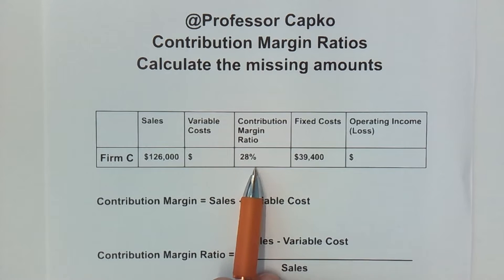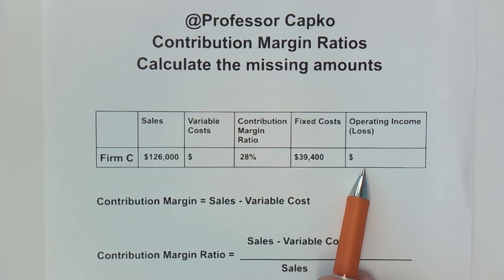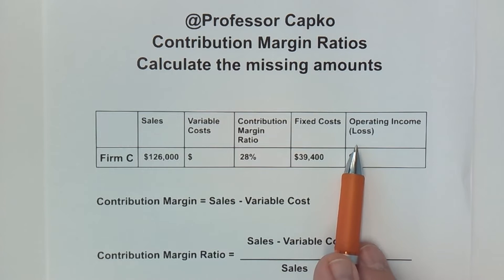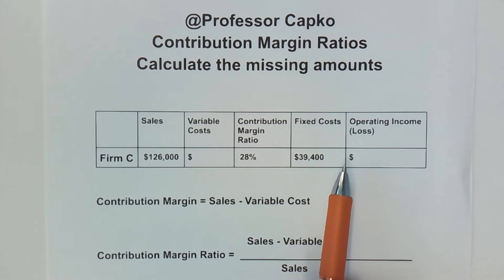We do have the contribution margin ratio, and we also know the amount of the fixed cost — in this case $39,400. What we don't know is the operating income, or if the fixed costs are higher than the contribution margin, it will be a loss. In accounting, we designate a loss or negative numbers using parentheses.